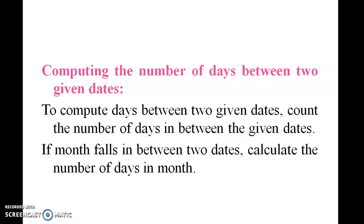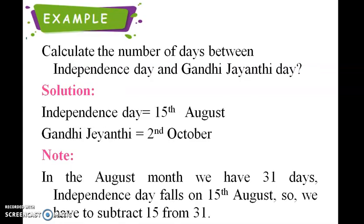To compute the number of days between two given dates, count the number of days in between the given dates. For example, count the number of days between Independence Day and Gandhi Jayanti. Independence Day is 15th August and Gandhi Jayanti is 2nd October.